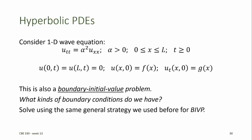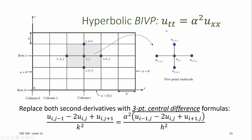We'll solve this using the same general solution that we used for parabolic PDEs. In this case, like the elliptic PDEs, we need to replace both second derivatives with three-point central difference formulas, and that results in a five-point molecule.